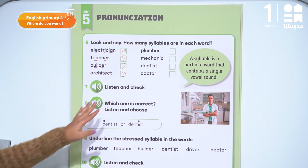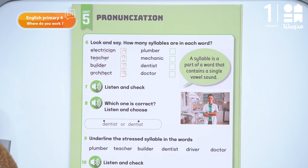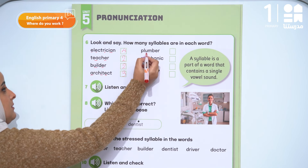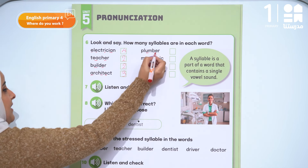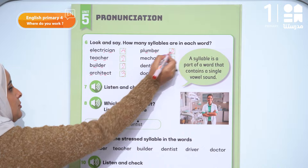Let's look at 'plumber.' We have the U and we have the E. So two syllables.